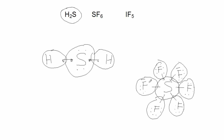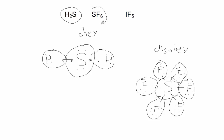To have a total of twelve electrons when it forms covalent bonds with the six fluorines — we see sulfur disobeying the octet rule in SF₆, whereas in H₂S we see sulfur obeying the octet rule.